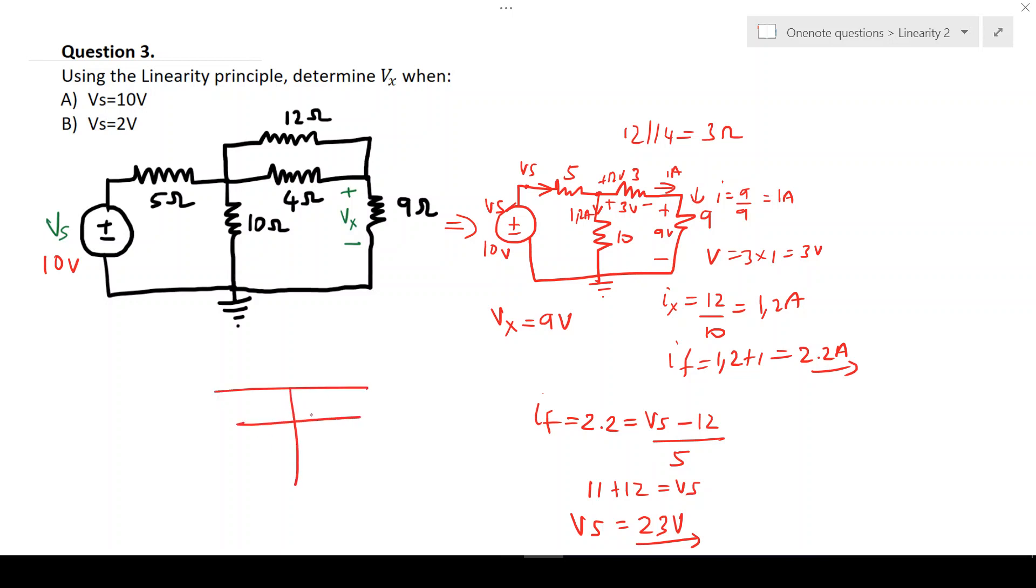Now we will compare. So we will say Vx versus Vs. I assumed 9 volts, and I got 23 volts, but the actual value is 10 volts. So what is the required Vx value? And I will then just divide. X divided by 9 is going to give me 10 over 23.